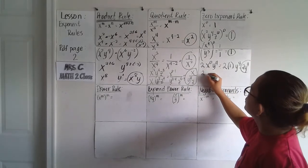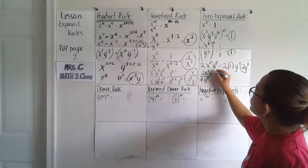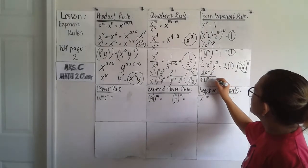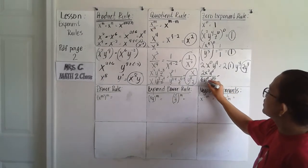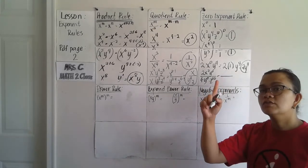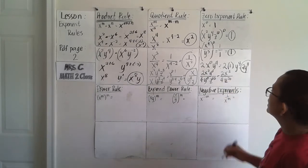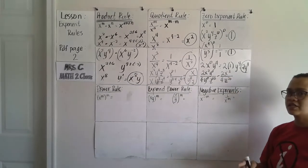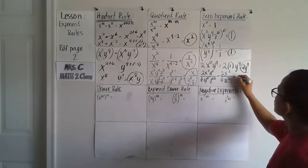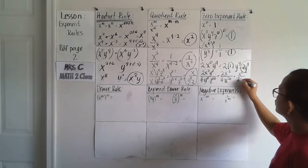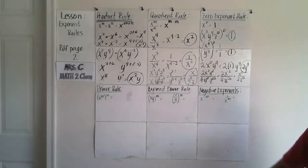Another example: 2x squared divided by 4y to the 0 power times z to the 20th. The y to the 0 becomes 1. Copy 2x squared and 4z to the 20th. Can I simplify 2 over 4? Yes — dividing both by 2 gives x squared over 2z to the 20th power.